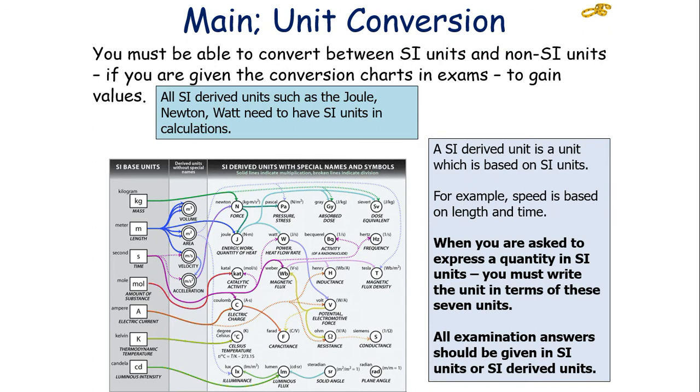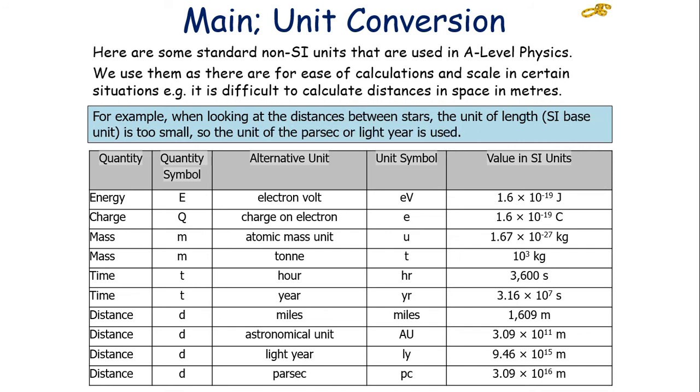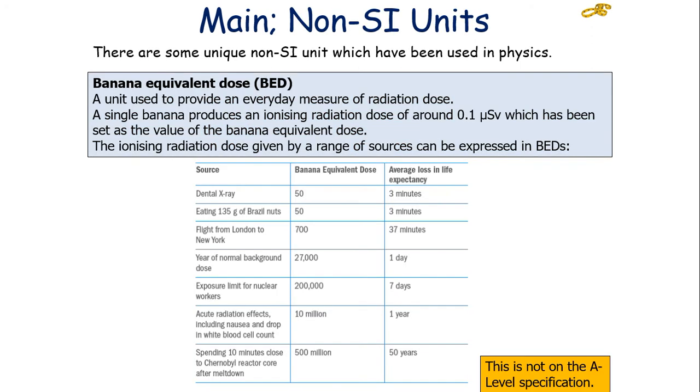You've got to also be able to convert between SI units and non-SI units. That also includes our SI-derived units, such as the joule, the newton, and the watt. Here you can see some standard non-SI units that are used in A-level physics. We use them for the ease of calculations and scale in certain situations. For example, it can be difficult to calculate distances in space in metres, so we use other non-SI units. Another example would be when we look at the energy of electrons in atoms. The unit of the joule, the SI-derived unit, is too big, so the electron volt is used. Another example is when looking at the masses of large vehicles. The unit of the kilogram is too small, so we use tonnes instead. Another example is when we look at the distances between stars. The unit of length in metres is too small, so we use the unit of parsecs or light-years instead.